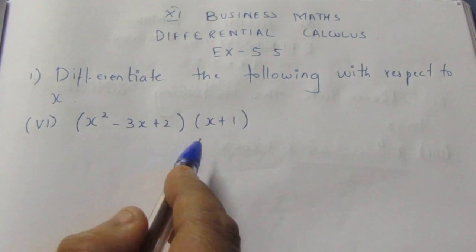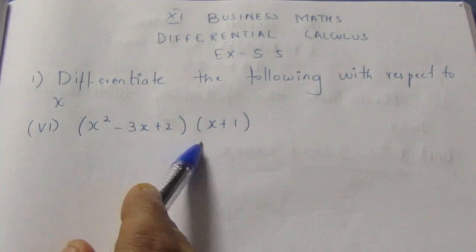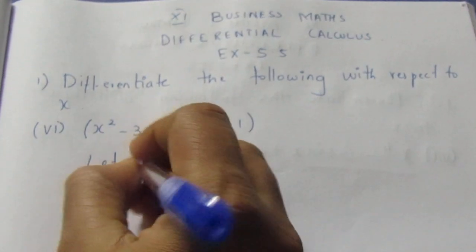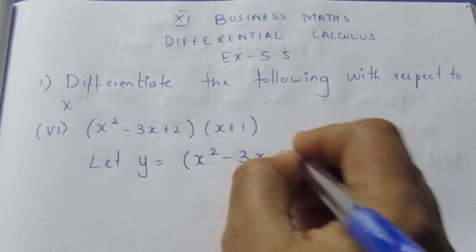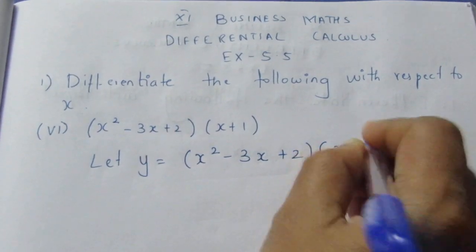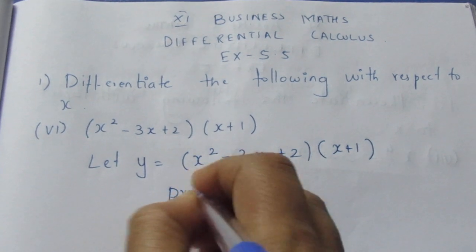We will apply product rule. Let y = (x² - 3x + 2)(x + 1). We will use product rule differentiation.